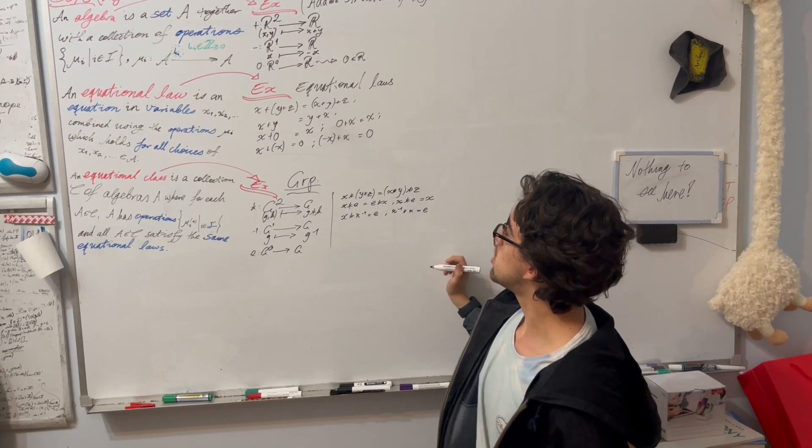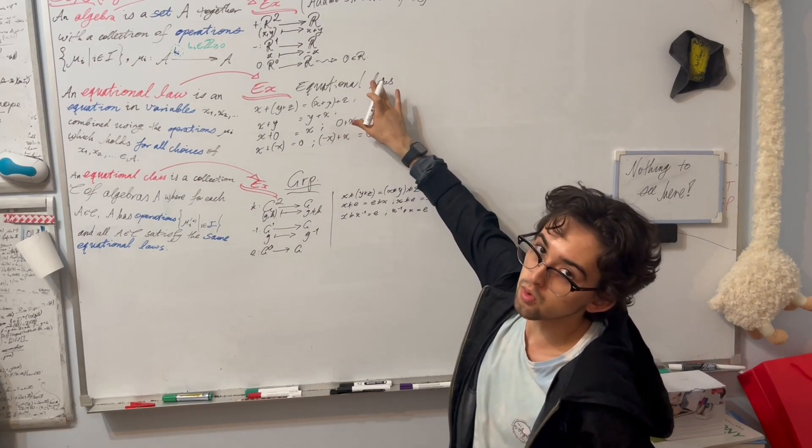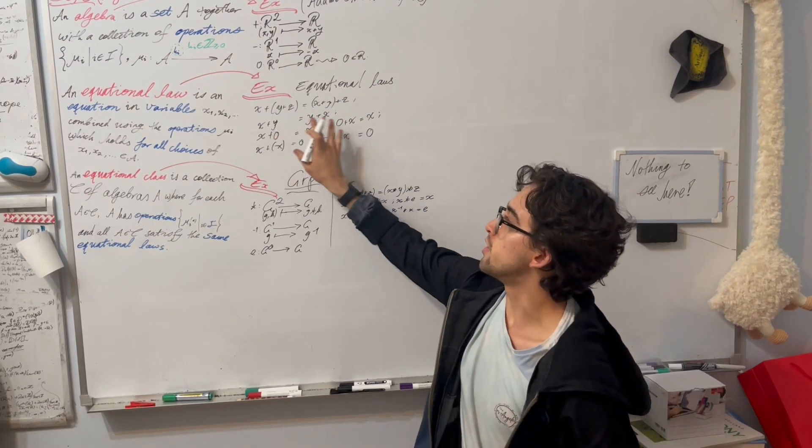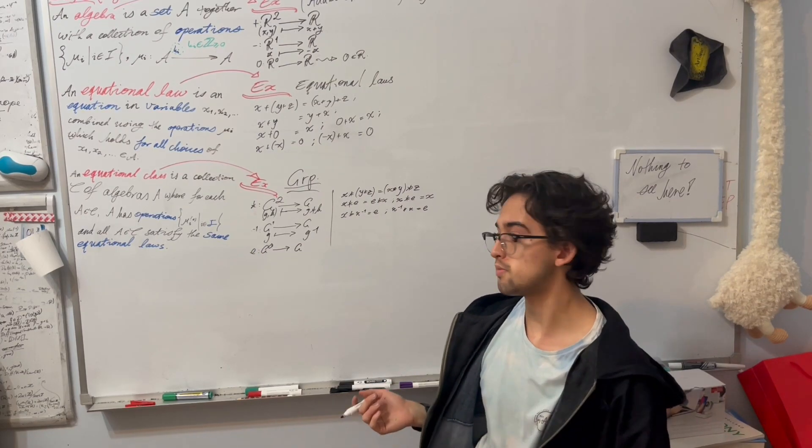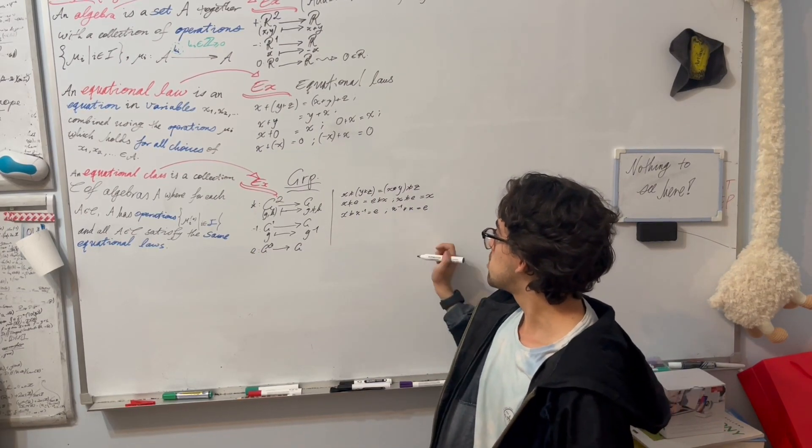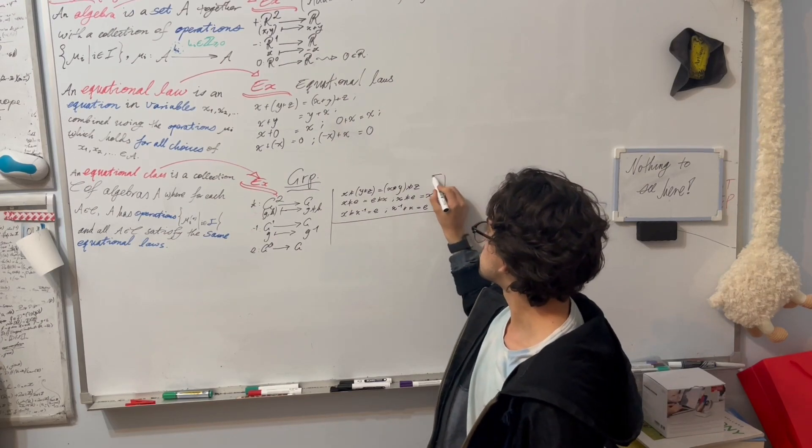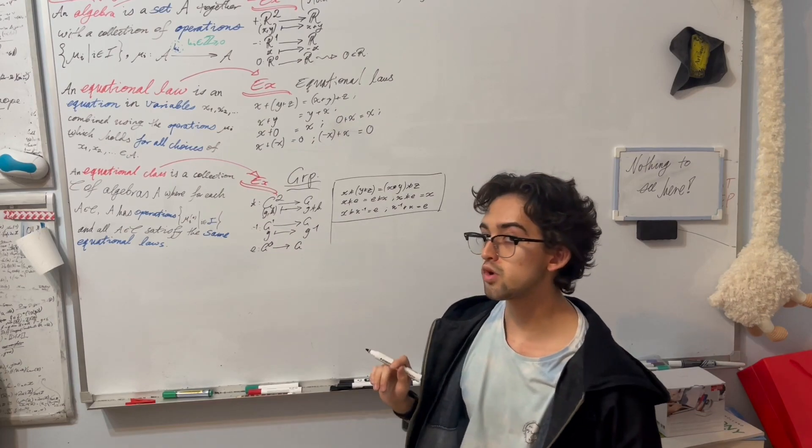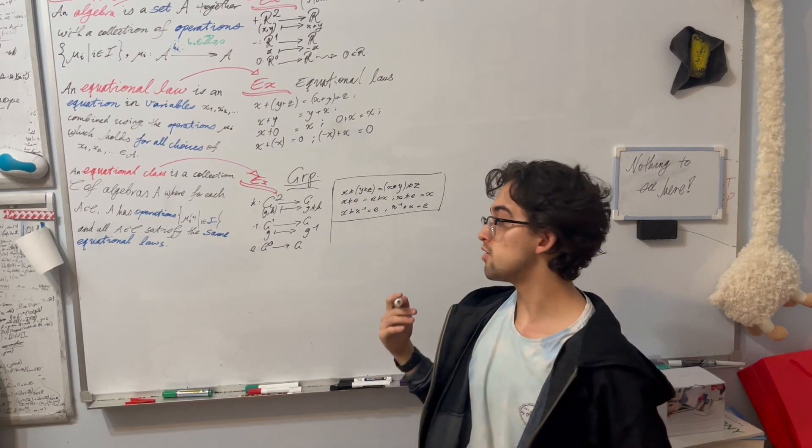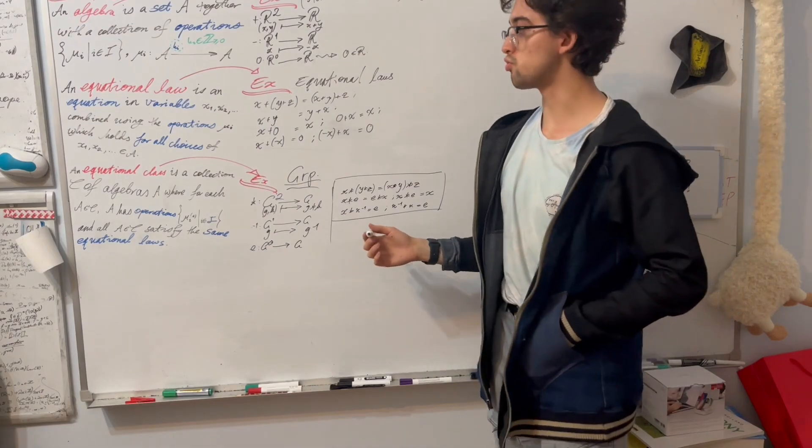And these three laws here are, well, they're the same laws as up here, except for the extra commutativity requirement that we have in the additive structure of R. But these three laws completely capture the notion of a group, if we use these three operations. So this gives a universal algebraic encoding of a group.